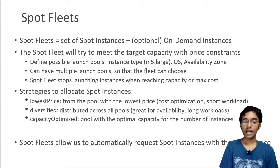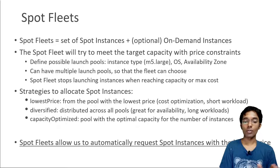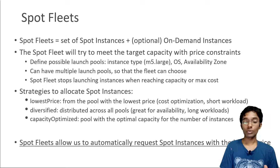You need to understand the difference between a simple spot instance request — where you know exactly the instance type and availability zone you want — versus using a spot fleet, where you define all possible instance types and availability zones and let the fleet find the lowest price for you. Hopefully this gives a lot of insight into how spot fleets and spot instances are different. I hope you liked this lecture and I will see you in the next one.